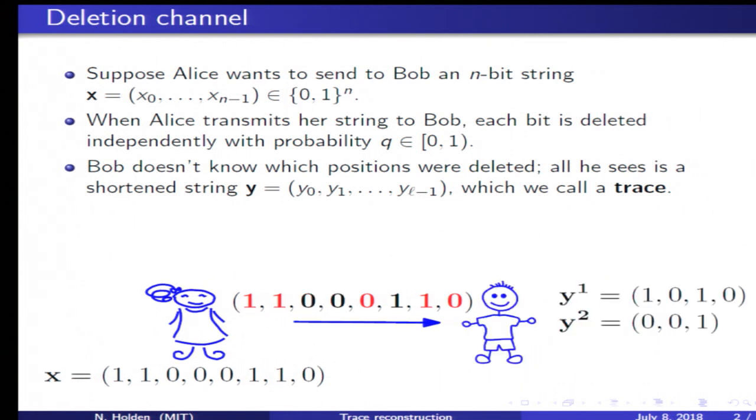Alice and Bob repeat this multiple times. Alice has sent her string through the deletion channel a second time, so Bob gets a second string Y2. We denote these output strings by traces.